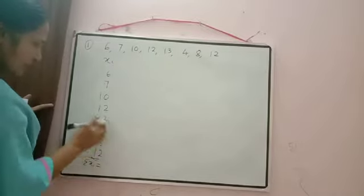Now we have to calculate mean deviation about mean — how much each value deviates from the mean. We write the column |xᵢ - x̄|. First: |6 − 9| = |−3| = 3. Then |7 − 9| = 2. |10 − 9| = 1. |12 − 9| = 3. |13 − 9| = 4. |4 − 9| = 5. |8 − 9| = 1. |12 − 9| = 3. So we have the deviations: 3, 2, 1, 3, 4, 5, 1, 3.